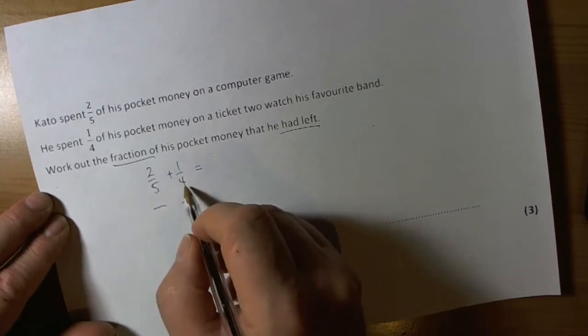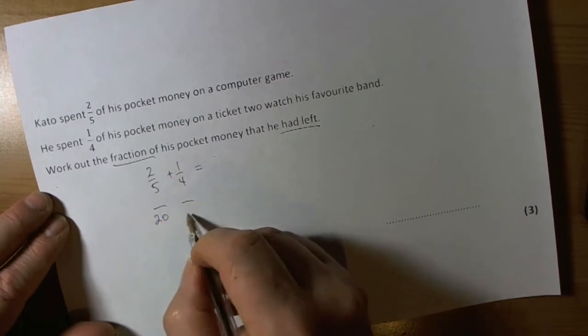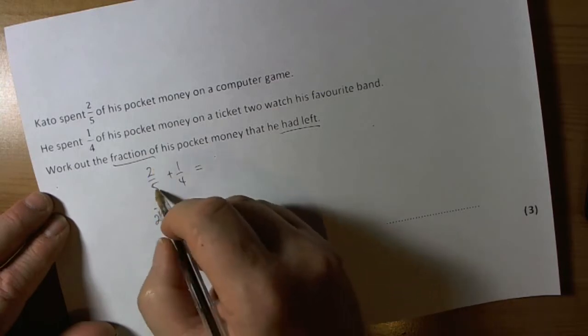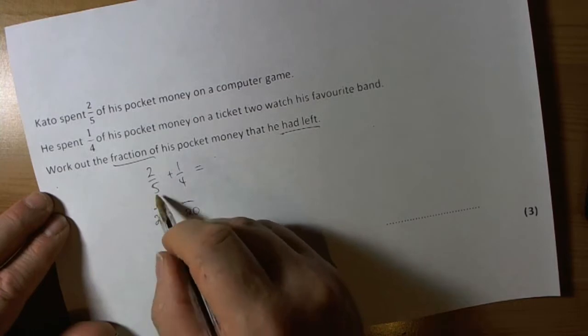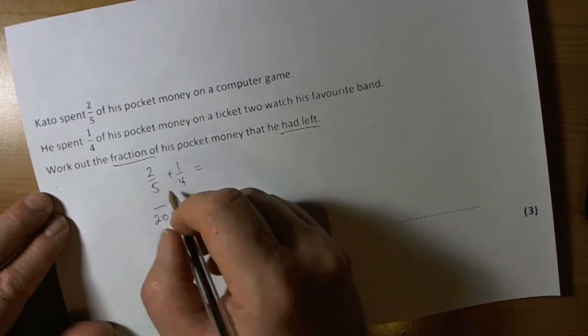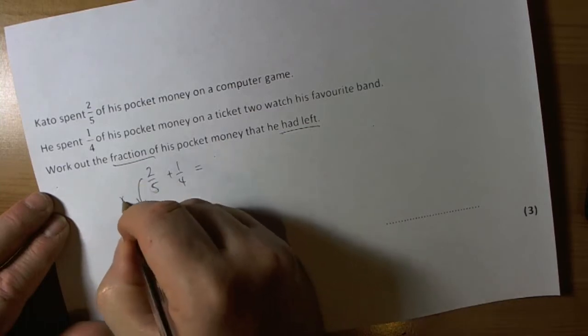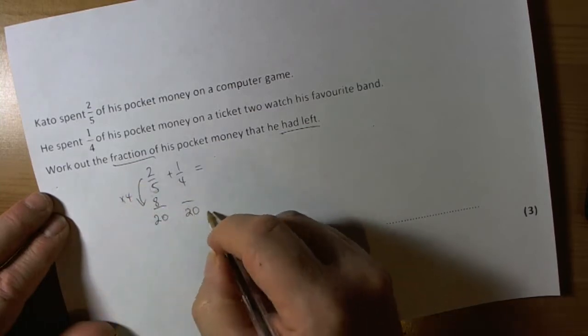So five and four both are factors of twenty, so if we turn these into twentieths. To turn a fifth into a twentieth, multiply by four on the denominator, so I have to multiply the numerator by four. So that's going to give me eight-twentieths.